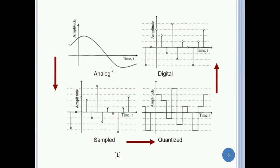An analog signal upon sampling becomes a sampled signal. After its quantization, it takes up fixed levels. These fixed levels are later converted into digital equivalent levels or binary levels, thus giving us a conversion from an analog signal to a digital signal.